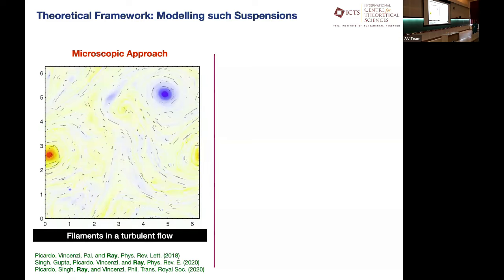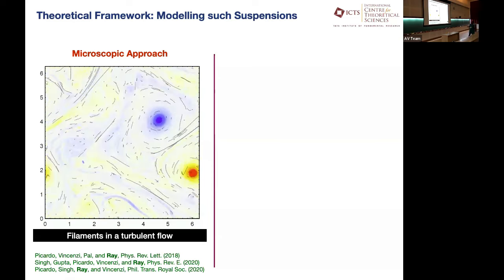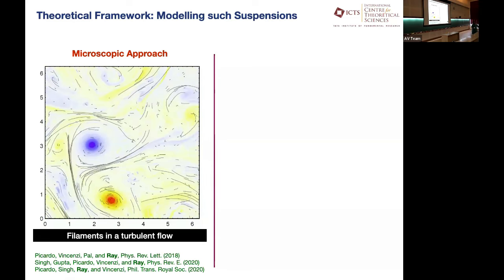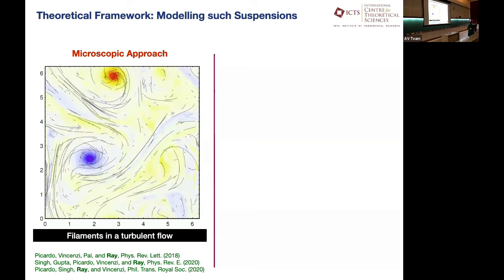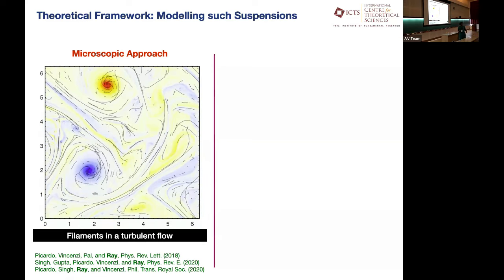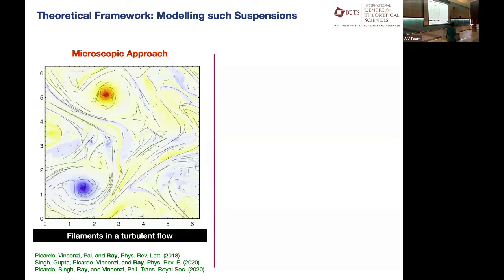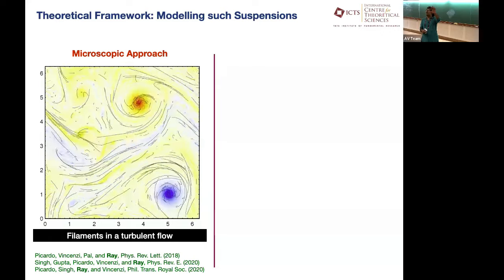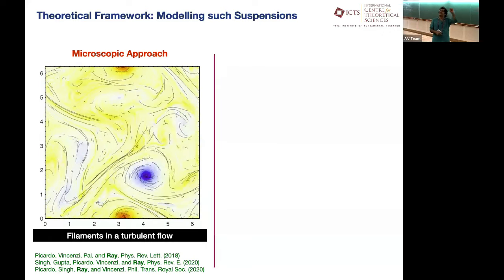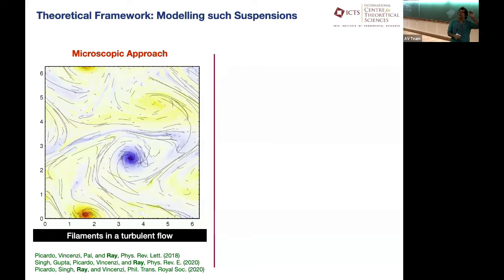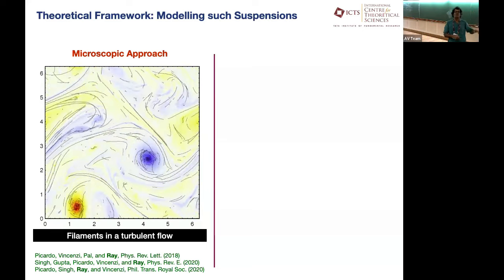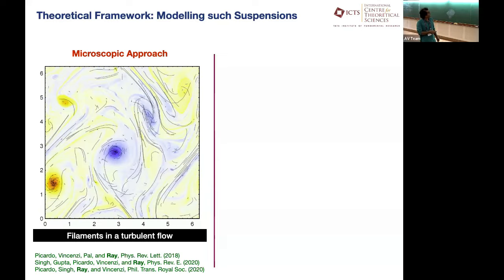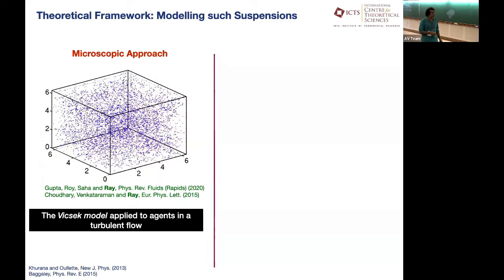One can extend this further. We've been looking at filaments — essentially simple bead-spring models — where the background is high Reynolds number water, say in a pond or marine environment which is really turbulent, where either swimmers or filamentary objects are moving.